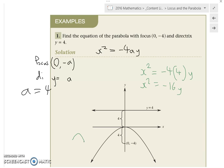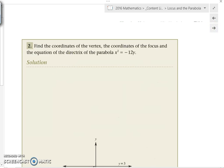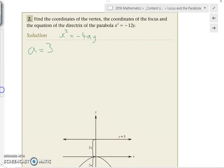Alright, next one. We have to find the coordinates of the vertex, the coordinates of the focus, and the equation of the directrix. So, we have it already in x squared equals minus 4ay format. A equals 3. I assume you said 3, not negative 3, Nick. Okay, so what does that tell us? What does the A tell us?